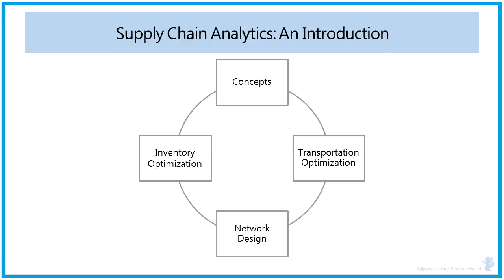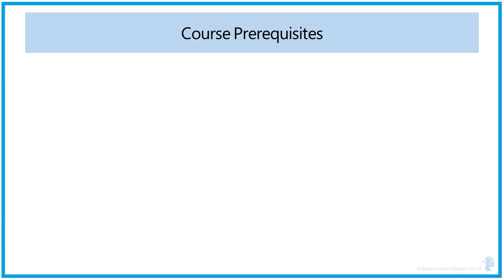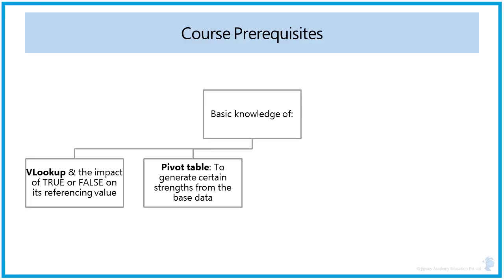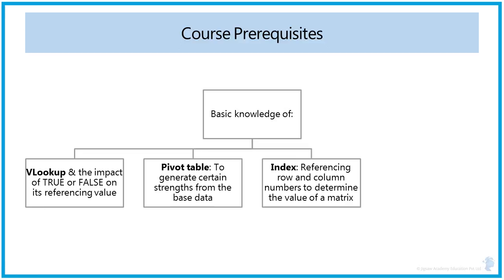Before going into detail of those topics, we are going to see what the prerequisites for this course are. We require basic knowledge of Excel functions like VLOOKUP — including the impact of true or false on referencing the value — pivot tables, how to use them to generate certain strings and consolidate values from base data, the INDEX function to retrieve values using row and column numbers, and the goal seek function in the data tab of Excel. Basic Excel functions will be required primarily in the inventory section.